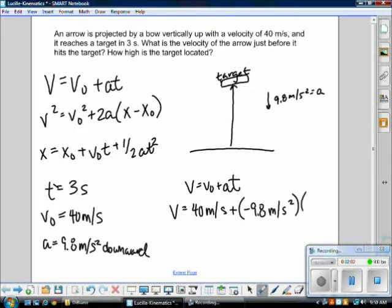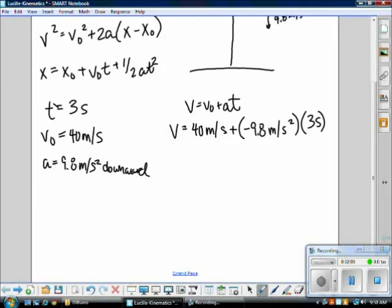Using some simple calculations with your calculator, you can find out that it's 40 meters per second plus a negative 29.4 meters per second. You have to make sure you put units in your problem too, to make sure that your units are correct. You can't add meters with seconds. Sometimes, units actually save you.